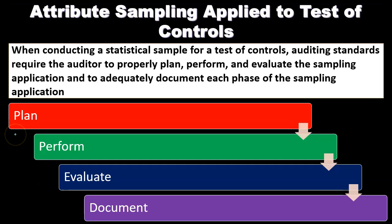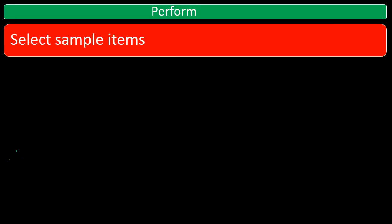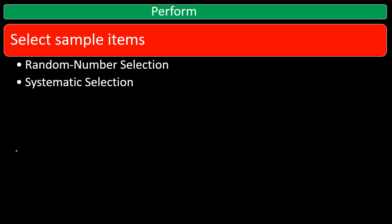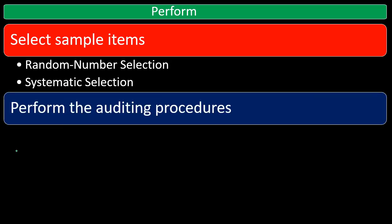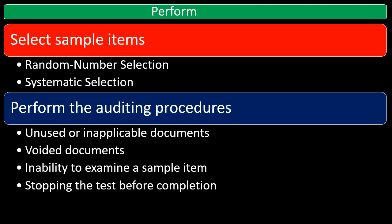We're taking a look at perform this time. The planning is now done — we're going to get down to the actual work, the actual performing. Under perform, we will select the sample items using either random number selection or systematic selection, and we will perform the auditing procedures.